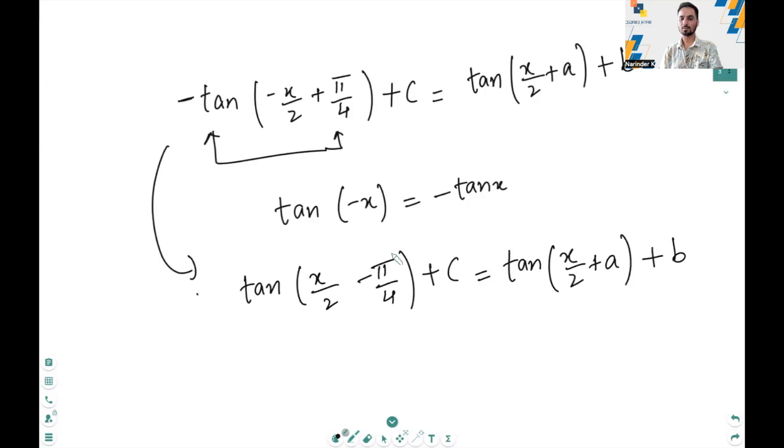Now, comparing the two sides, we get the value of a, which is minus pi over 4, and the value of b, which is equal to the constant c. So finally, we can say that a equals minus pi over 4 and b equals c, which is a constant.